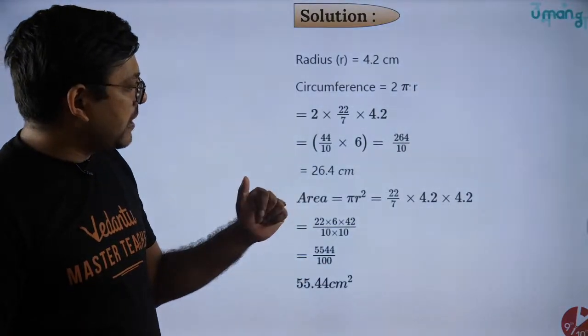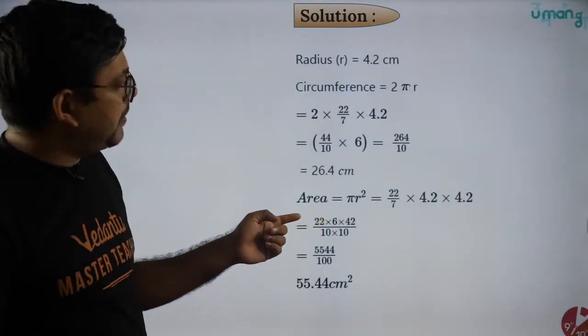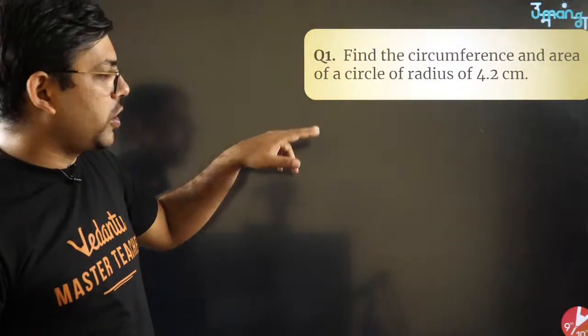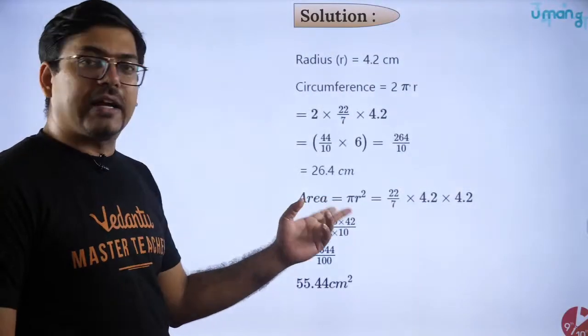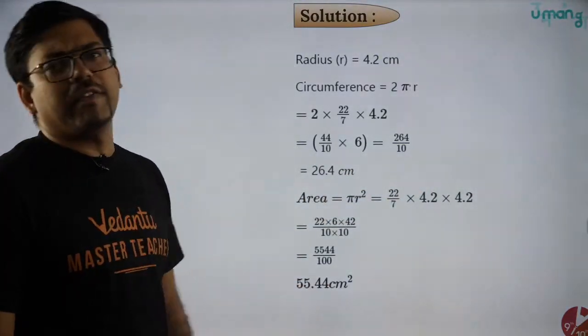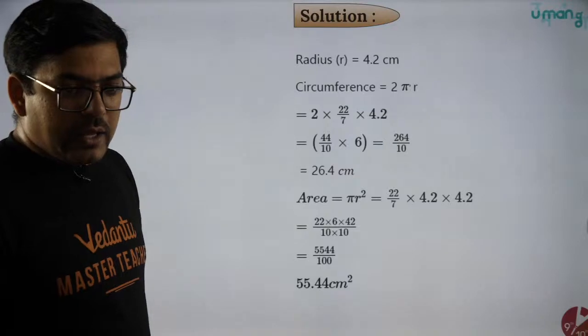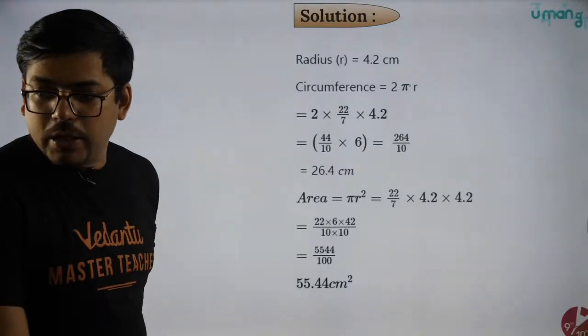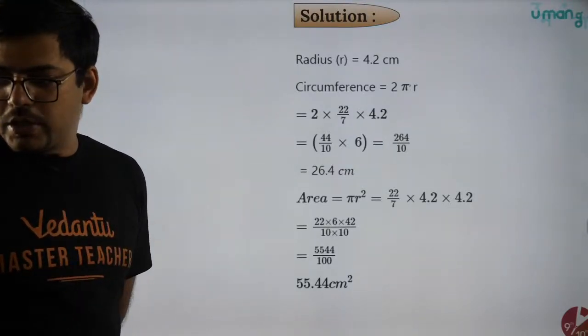Area nikalne bola tha, yeh main dekha nahi tha. Find the circumference and area - sorry, main area bhool gaya tha. Area bhi nikal sakte ho, πr². Pi r into r kar loge, value aa jayegi 55.44 cm². Aage badhen, let's move on.